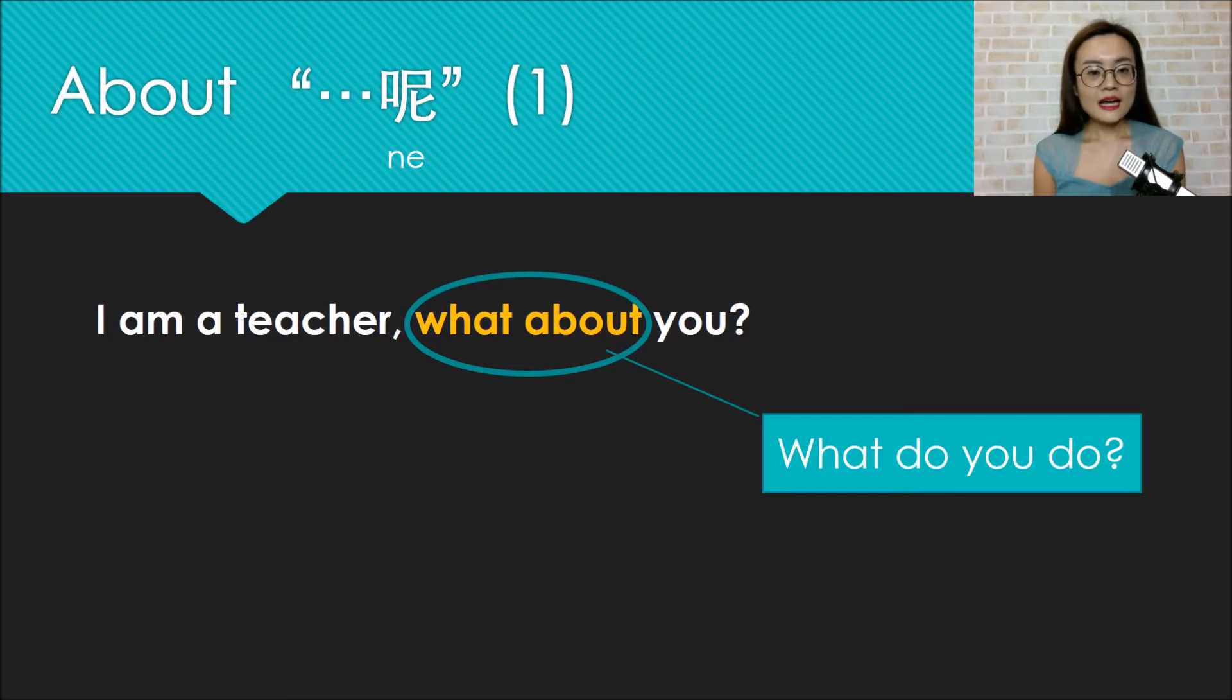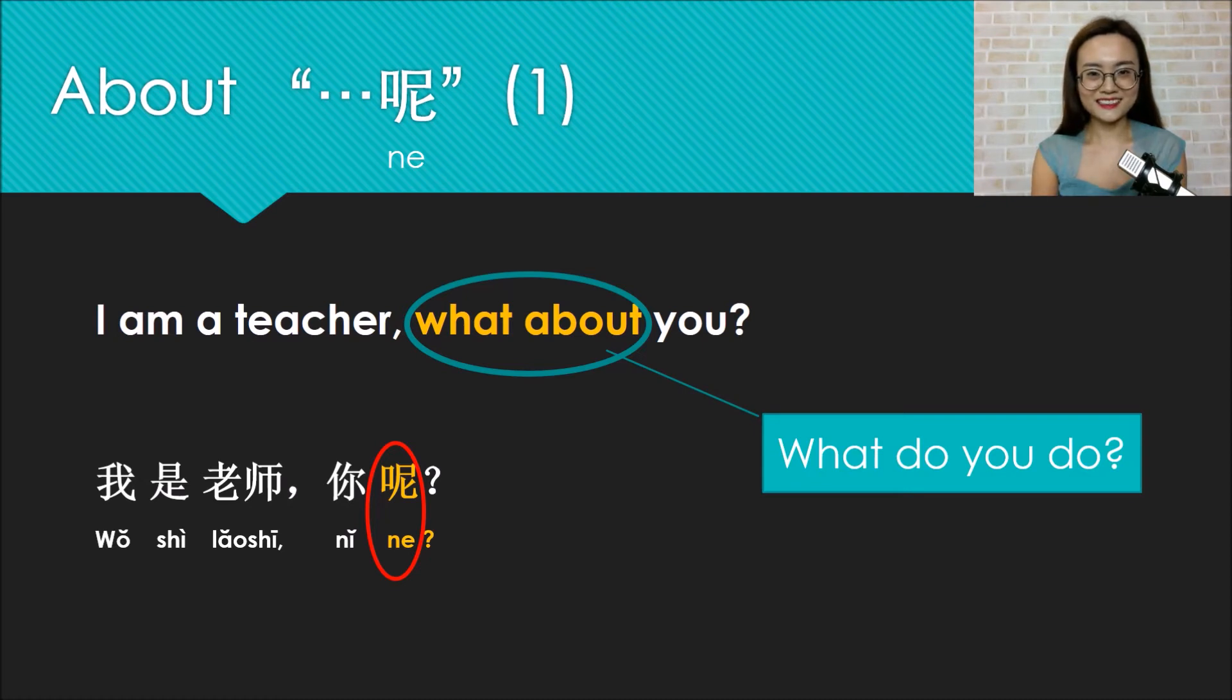So how do you express what about in Chinese? In fact, what about in Chinese is quite easy. Wo shi laoshi, ni ne? So what about can be expressed with ne. Quite easy. Just add ne at the end of the question.